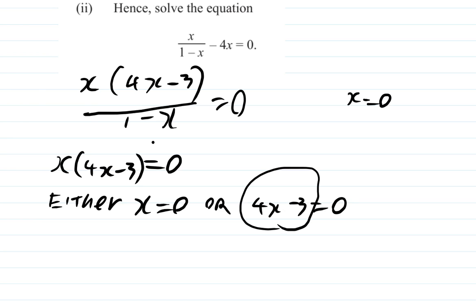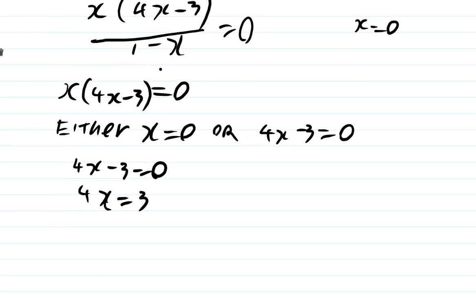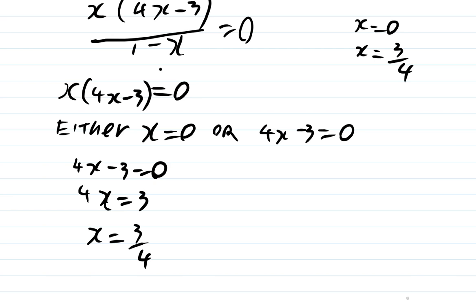What happens if 4x minus 3 equals 0? If 4x minus 3 equals 0, then if you add 3 to both sides, then 4x must be equal to 3. What would x be? If you divide both sides by 4, then what you're going to find is that x is equal to 3 quarters. So x equals 3 quarters is another solution to this equation. So x equals 0 and x equals 3 quarters.